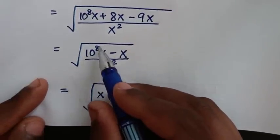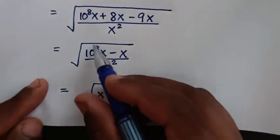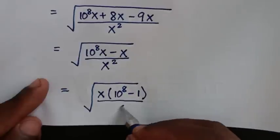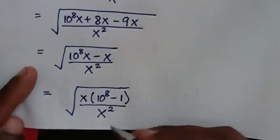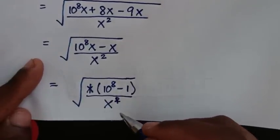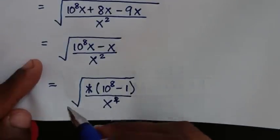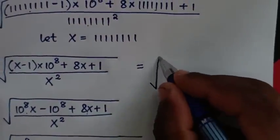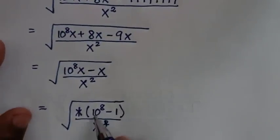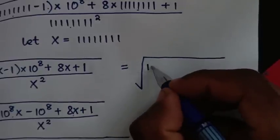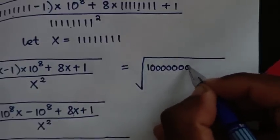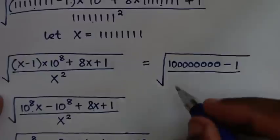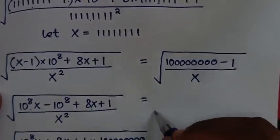Taking x out of the bracket: 10⁸x divided by x is 10 to the power of 8, then minus x divided by x is minus 1, bracket, over x squared. In the next step this x will cancel with this squared, so it will be the square root of (10 to the power of 8 minus 1) over x. So it will be equal to the square root of 10⁸ minus 1 over x.